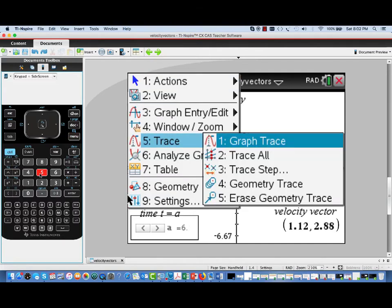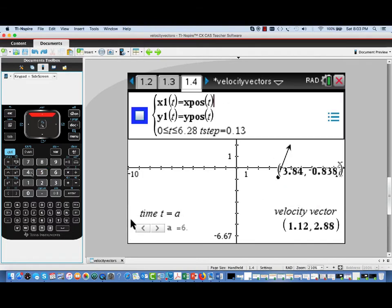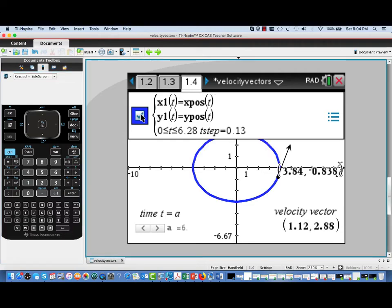Now I'm going to erase that geometry trace and draw the path actually using the regular parametric plotter. So we've just entered those position functions into the regular parametric plotter, and there's our plotted ellipse.